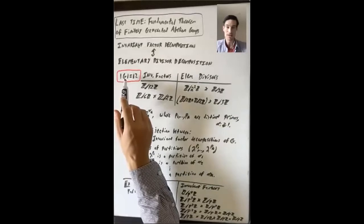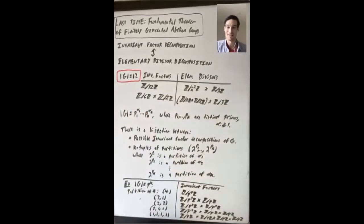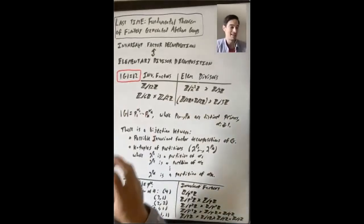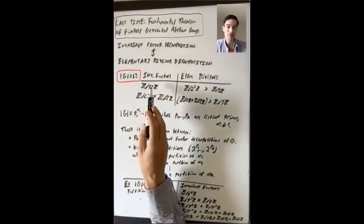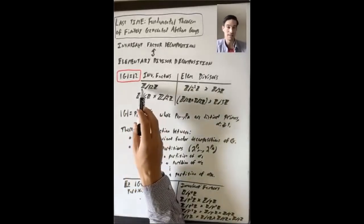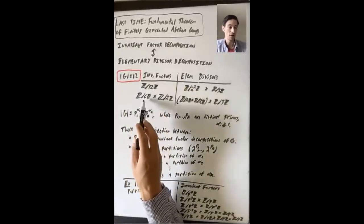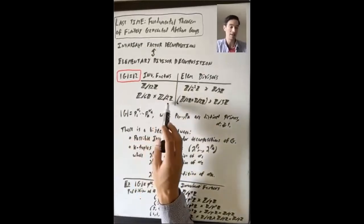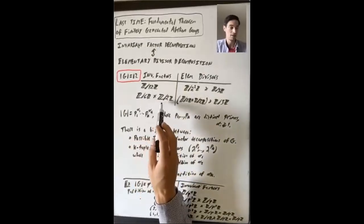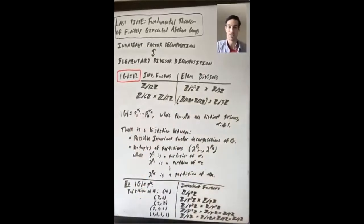So now let's look at the particular case of order 12. We know that 6 divides n1. So we're just in a case where we have two possibilities: either n1 is 12 and you get Z mod 12Z, or n1 is 6 and n2 is 2, giving Z mod 6Z cross Z mod 2Z.